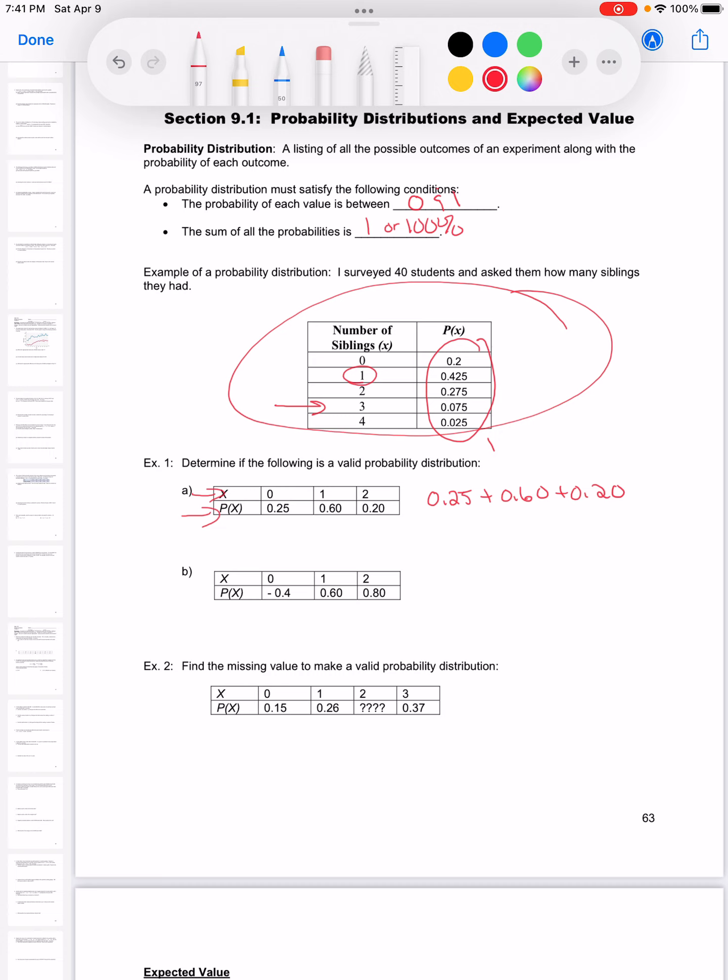The sum has to be 1 and all those probabilities have to be numbers between 0 and 1. They're all between 0 and 1.